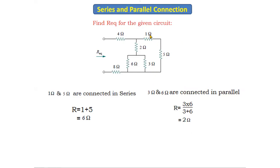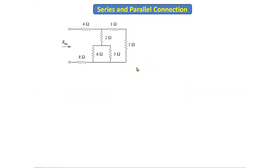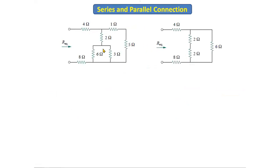Now this total circuit can be redrawn: the 1 ohm and 5 ohm are replaced by 6 ohms, and the 6 ohm and 3 ohm are replaced by 2 ohms — the first pair using series operation and the second using parallel operation. Let's move to the next step.